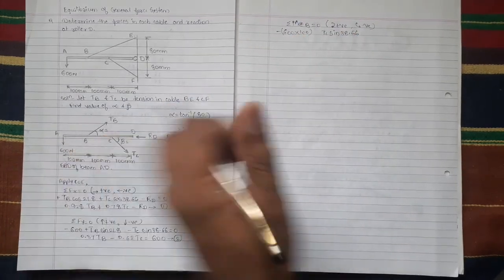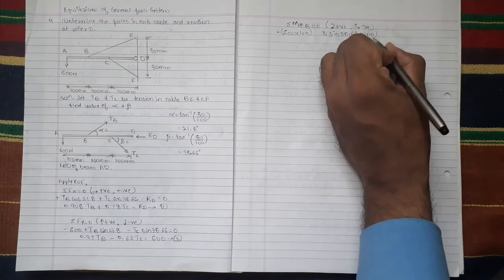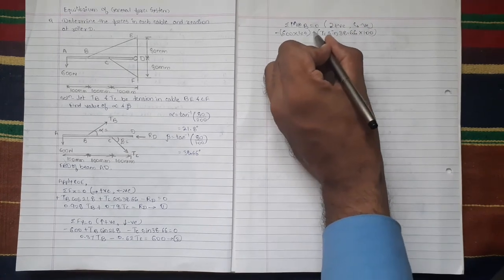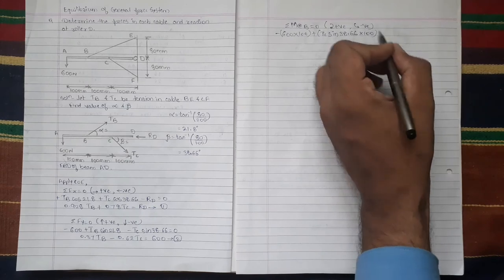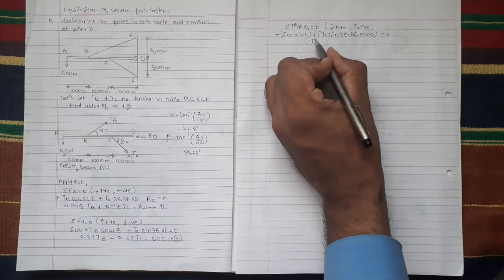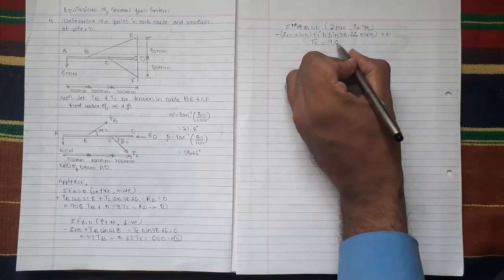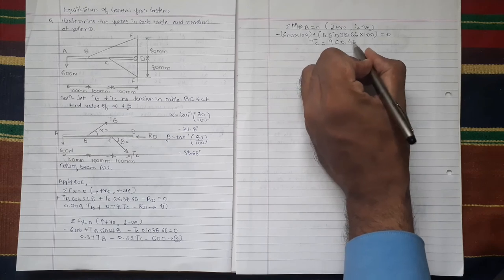So here, this sin component is at a distance of 100 from B. It is going to create clockwise, so it is taken plus, is equal to 0. So here, there is only one unknown TC. On simple equation, we get value of TC which is equal to 960.46 Newton.